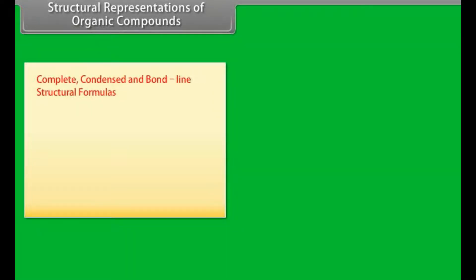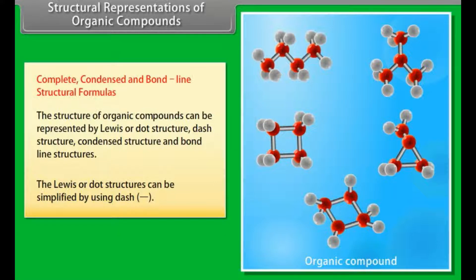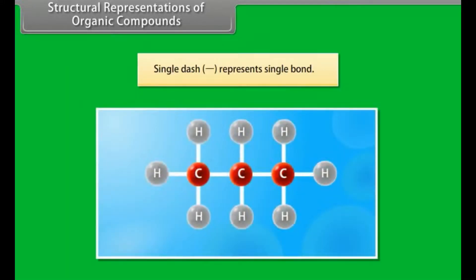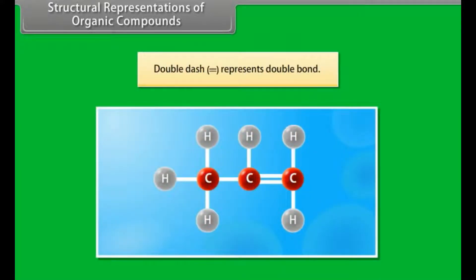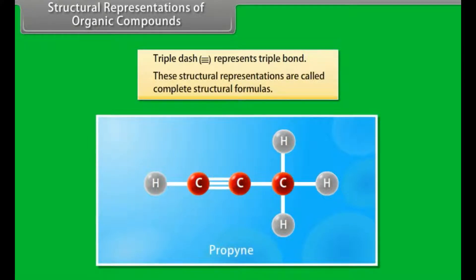Structural representations of organic compounds — complete, condensed and bond line structural formulas. The structure of organic compounds can be represented by Lewis or dot structure, dash structure, condensed structure and bond line structures. The Lewis or dot structures can be simplified by using dash. Single dash represents single bond, for example propane. Double dash represents double bond, for example propene. Triple dash represents triple bond, for example propyne. These structural representations are called complete structural formulas.